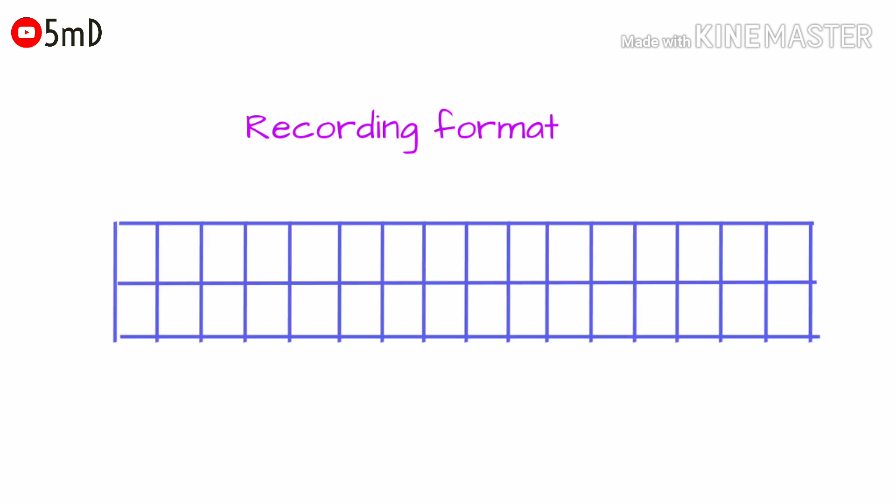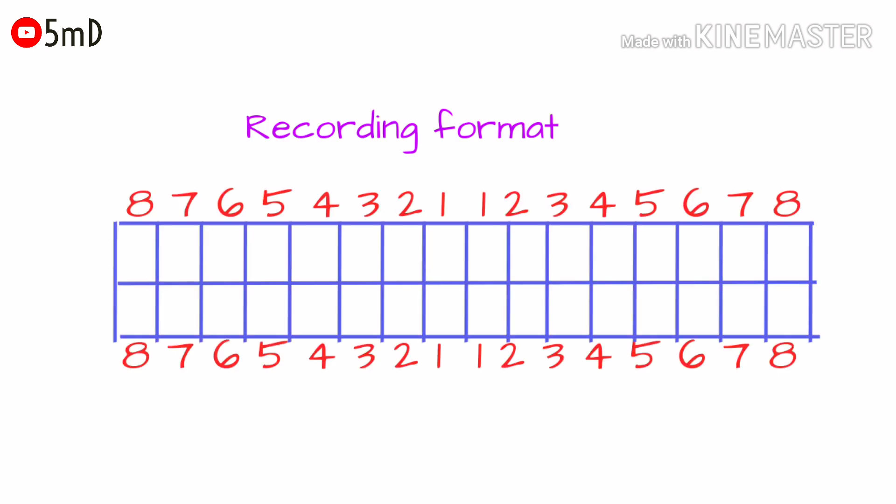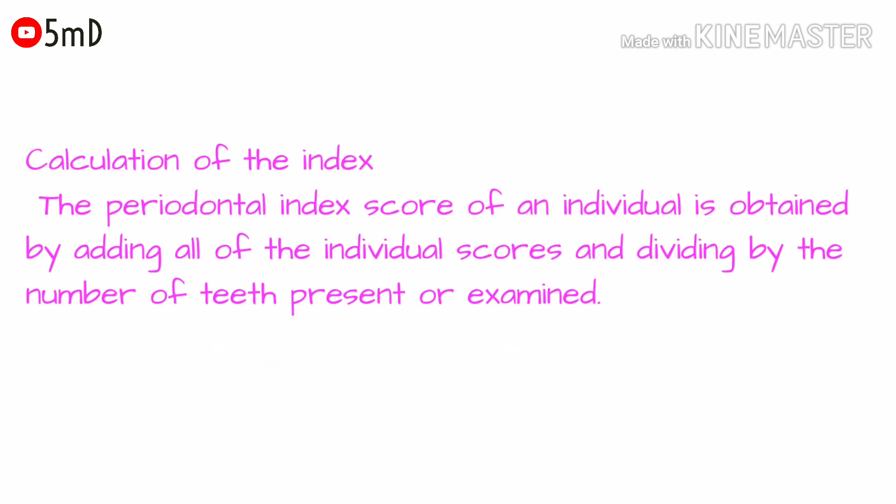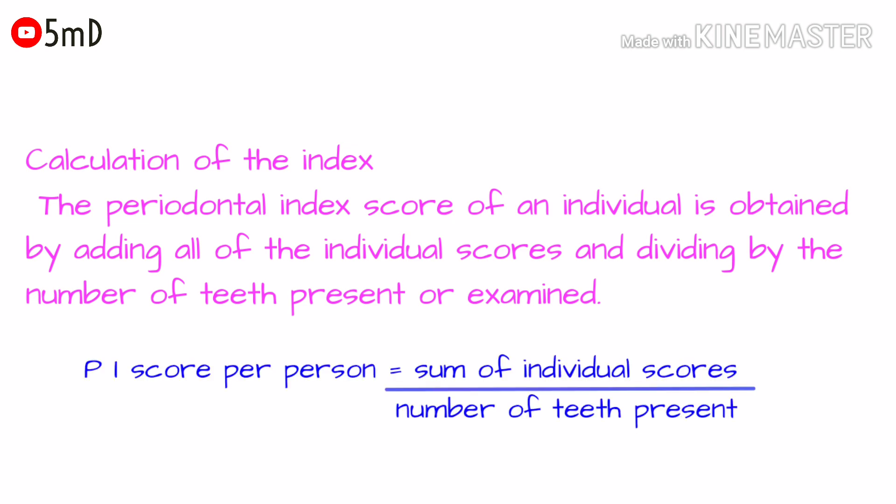The recording format is as follows: for every tooth present, we have to examine and enter a score value. To calculate the index, the PI score per individual is obtained by adding the individual scores of each tooth and dividing by the number of teeth present or examined. The value we get gives us the interpretation we need.